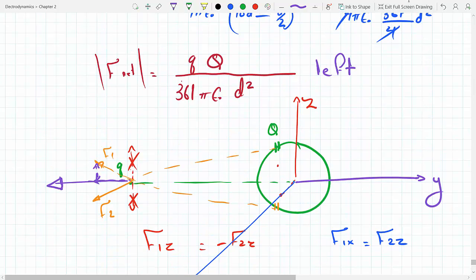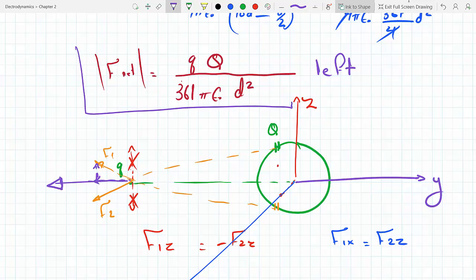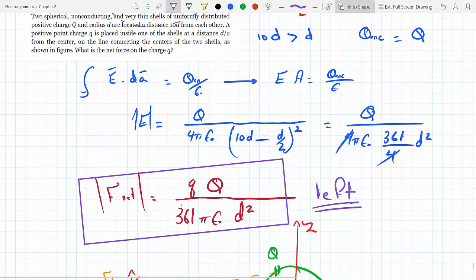So that means this would be our answer. Magnitude is here and the direction obviously is to the left. And that concludes this question.